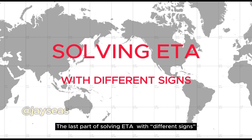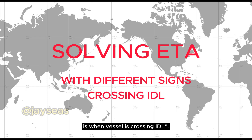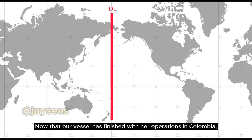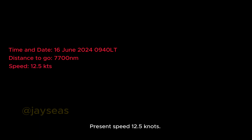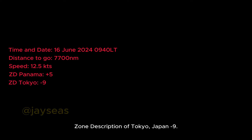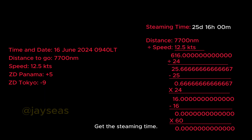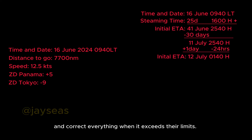The last part of solving ETA with different signs is when the vessel crosses the IDL. The vessel has finished operations in Colombia, crossed the Panama Canal, and is making her way to Tokyo, Japan. Present date and time: 16th of June 2024, 0940 local time. Distance to go: 7,700 nautical miles. Present speed: 12.5 knots. Zone description of Panama: plus 5. Zone description of Tokyo, Japan: minus 9. Same procedure: get steaming time, add to local date and time to get the initial ETA, and correct everything when it exceeds limits.